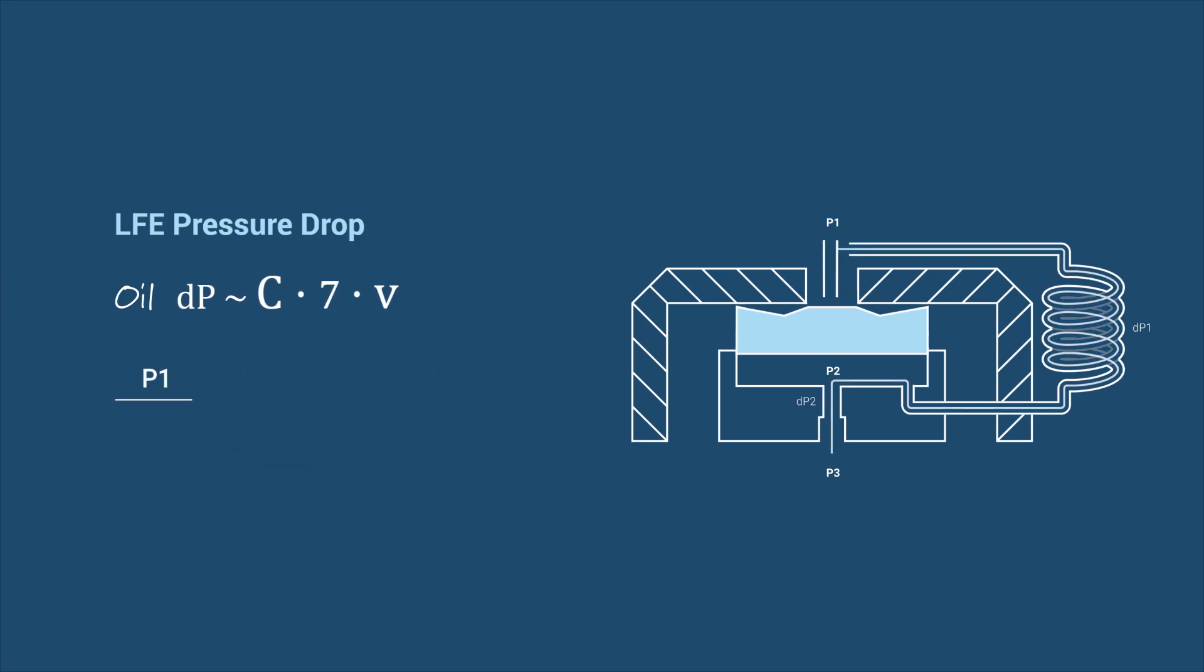When oil is flowing, the high pressure drop in the LFE creates a low pressure in the pressure chamber below the piston at P2. This enables the higher P1 inlet pressure to push the piston down, allowing the oil to flow freely through the main flow into the well.